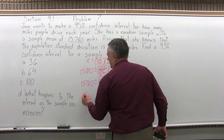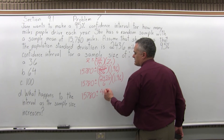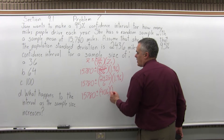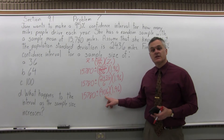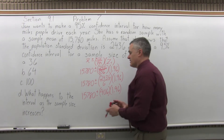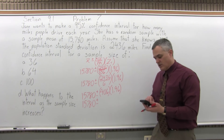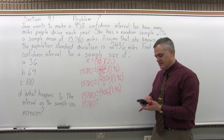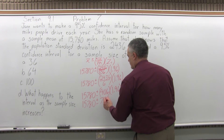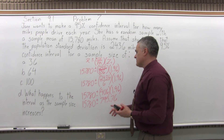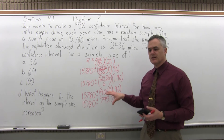So, 15,780 plus or minus 406 times 1.96. The next step is to multiply 406 times 1.96, which gives 795.76. So 795.76 would be called the margin of error — it's the one number value I get after the plus and minus after I do the computation to get it down to one number.